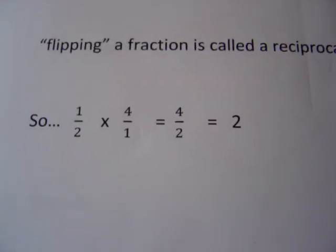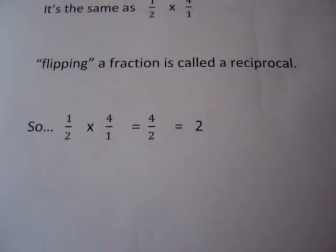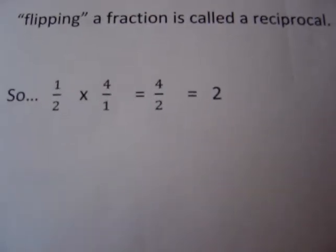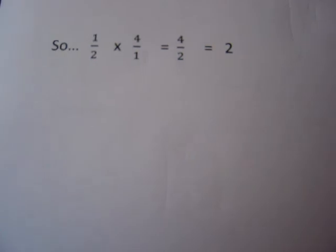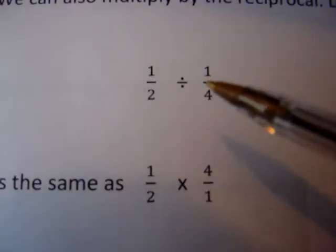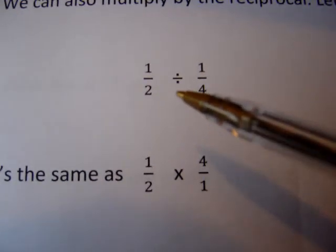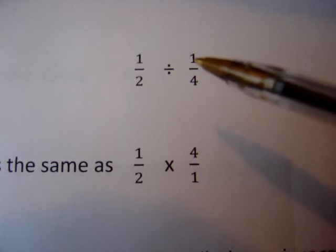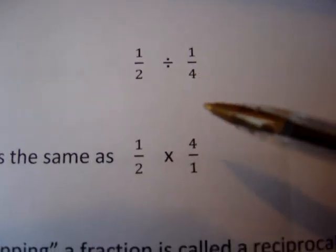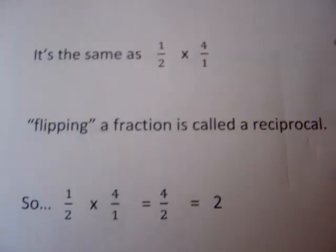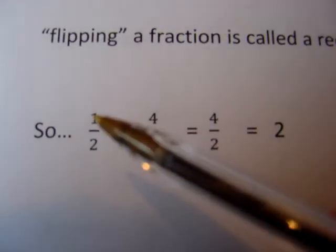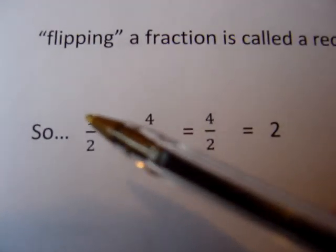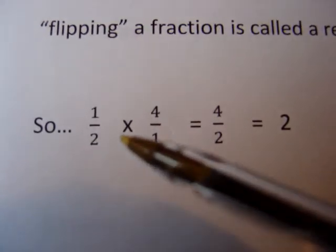We have three strategies: you can draw a picture, you can use common denominators and divide straight across, or you can multiply by the reciprocal, which is probably the best bet for dividing fractions. Make it a multiplication problem: change divide to multiply, and take the 1/4 and flip it to 4 over 1. Then you just multiply straight across. 1 times 4 is 4, 2 times 1 is 2, 4 over 2 or 4 divided by 2 is just 2.